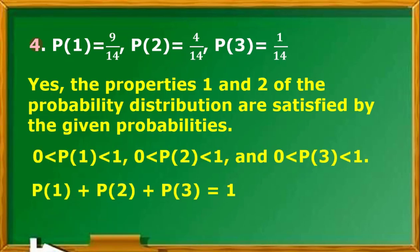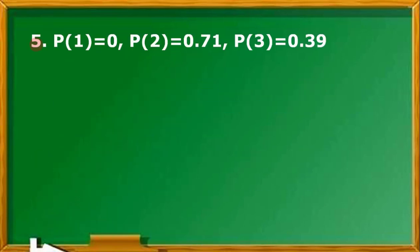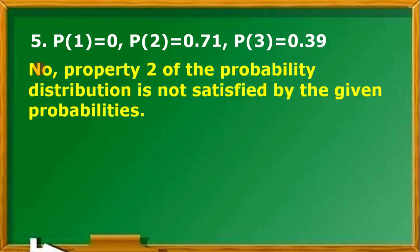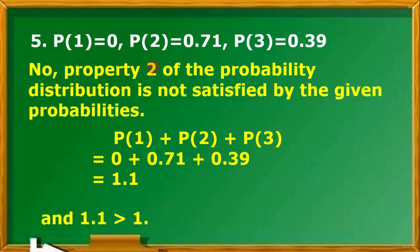For number 5: P of 1 equals 0, P of 2 equals 0.71, and P of 3 equals 0.39. These values are not a valid probability distribution because property 2 is not satisfied — the sum is 1.1, which is greater than 1.